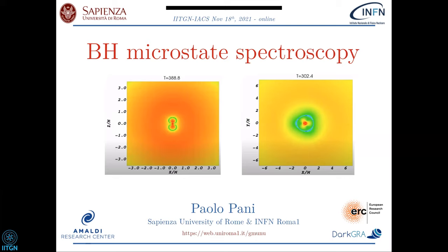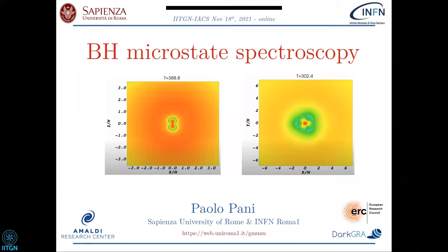It's always a pleasure to give this talk. Today I would like to present some recent results about testing the nature of black holes, and in particular near-horizon structures with spectroscopy — computing the quasi-normal modes of the ring-down of black hole microstates. Part of my talk will give an overview of the problem, then I will focus on the specific problem of black hole microstates arising in the so-called fuzzball proposal.